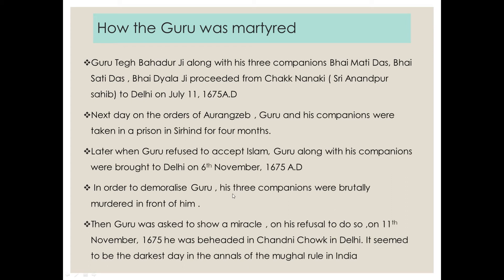Again Guru was asked to change into a Muslim, to accept Islam. When Guru denied, just to demoralize Guru, his three companions were brutally murdered in front of him. Then again Guru was asked to show a miracle. Guru said that in Sikhism one is not allowed to show a miracle. So on his refusal to do so, on 11th November 1675, he was beheaded in Chandni Chowk in Delhi — it seemed to be the darkest day in the annals of Mughal rule in India.